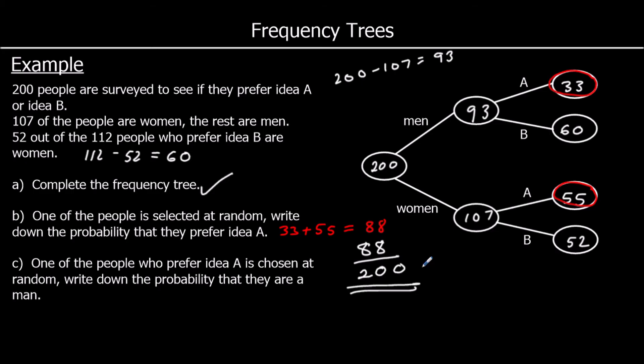Question C. Part C. One of the people who prefer idea A is chosen at random. Write down the probability that they are a man. So we know 88 people prefer idea A. So it's going to be out of 88. We're picking one of these 88 people. What's the probability they are a man? How many men are there in these 88 people? There are 33. So it's 33 out of 88.